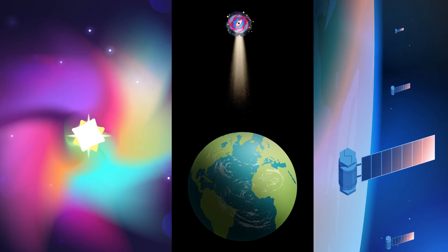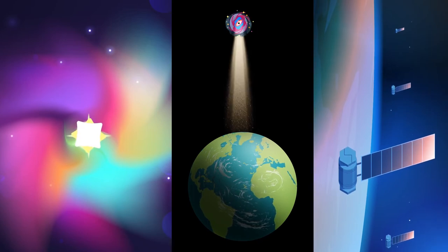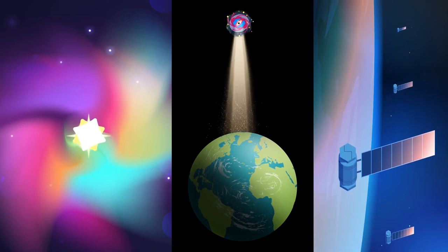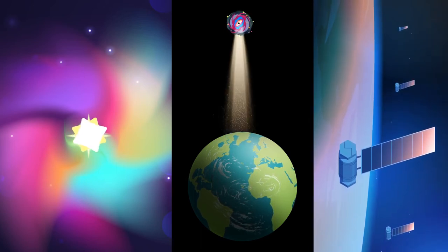And because a pulsar's beat is exceedingly steady, it could serve future deep space expeditions as a kind of GPS satellite, or IPS, interstellar positioning system.